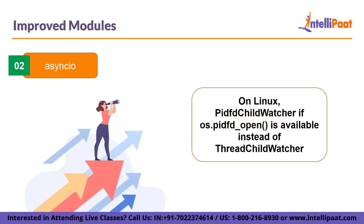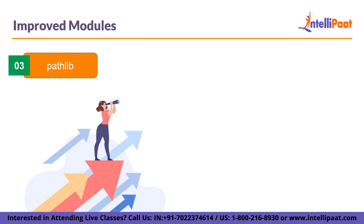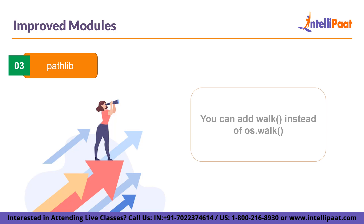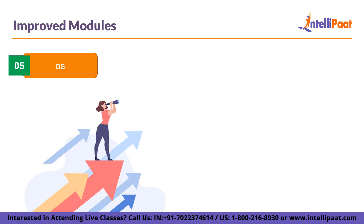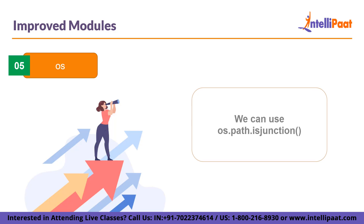These are only some of the improvements — if you check out the documentation, there will be a more detailed explanation of what all these improvements are and how you can use them in your programs. The next one is pathlib, where you can use walk instead of os.walk for walking directory trees and generating all files and names within them. Then we have the dis module, in which CDO instruction opcodes are going to be exposed. In the os module, os.path.isjunction is a new function to check if a path is a junction or not.